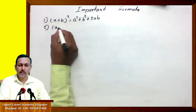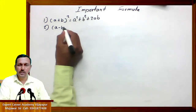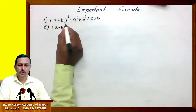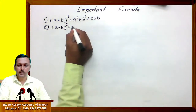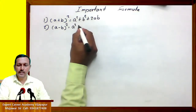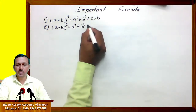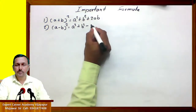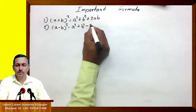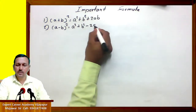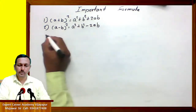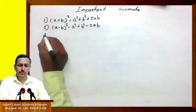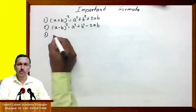(a minus b) bracket square equals a square plus b square minus 2ab. Third one,